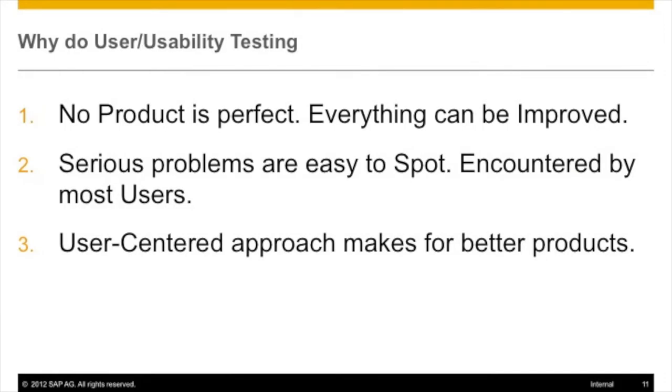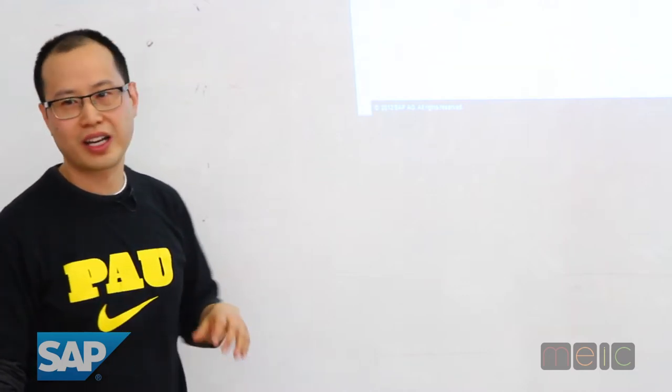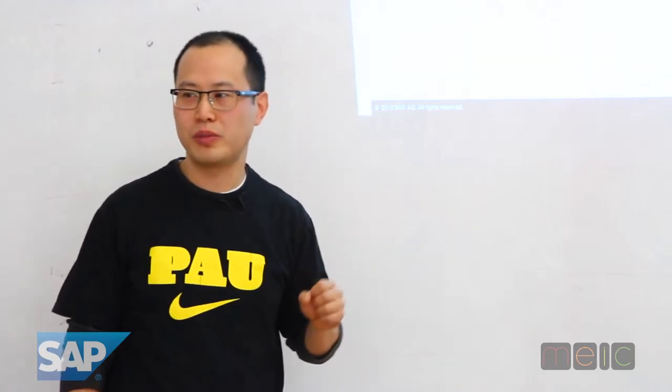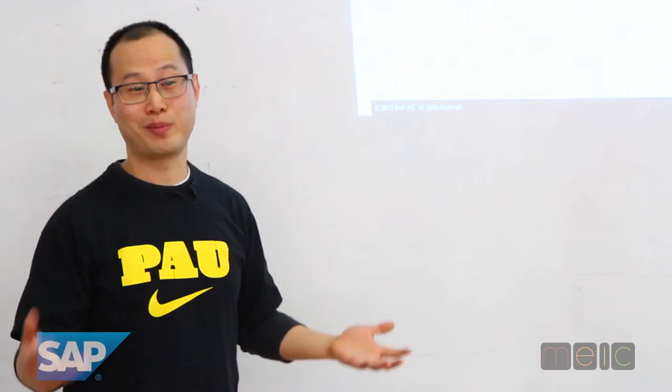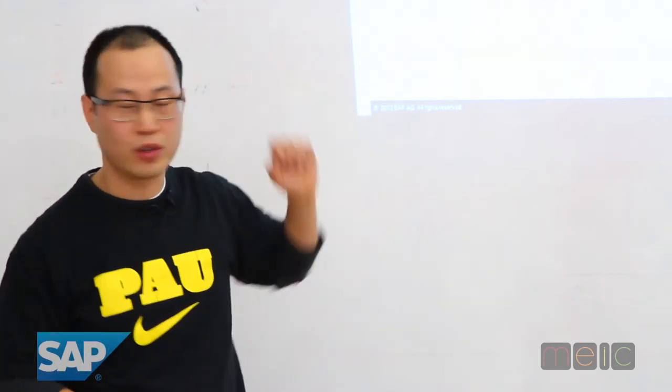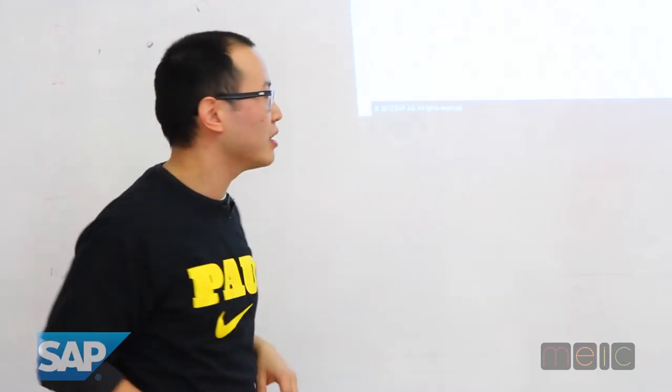Second, for the type of usability testing we're doing here, serious problems are really easy to spot — they're encountered by most users. Maybe it's statistically not perfectly accurate, and I can't say five times out of ten across 99% of the population. However, what we're doing is looking for very big problems. For a blunt tool like this one, that's good enough, because we're looking for those easy-to-find problems, not the hard ones. It's a good match.